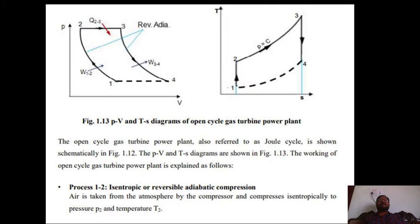The PV diagram and TS diagram are very important tools for analyzing thermodynamic cycles. These diagrams are essential for all cycles in applied thermodynamics. The open cycle gas turbine plant is also referred to as the Joule cycle. In the TS diagram, T is temperature and S is entropy; the PV diagram plots pressure versus volume. Process 1 to 2 is isentropic — or reversible adiabatic — compression.